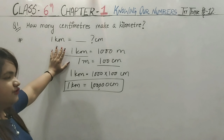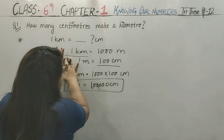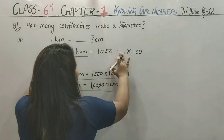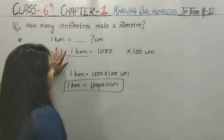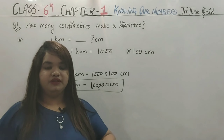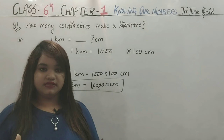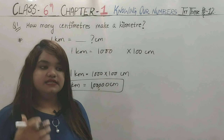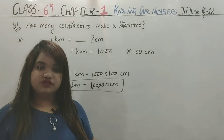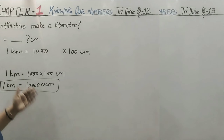So remember: 1 kilometer is 1,000 meters and 1 meter is 100 centimeters. We multiply the two to convert to centimeters. Whether it is liters, meters, or grams, once you understand the conversion chart, you will easily know how to convert them.